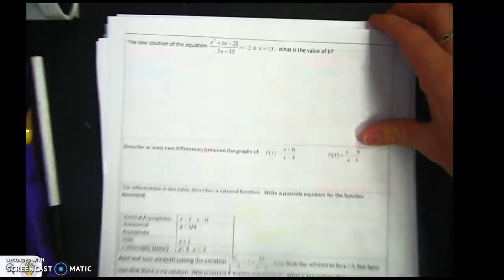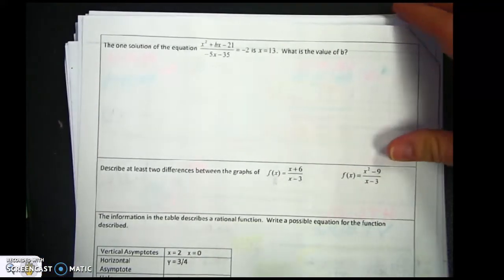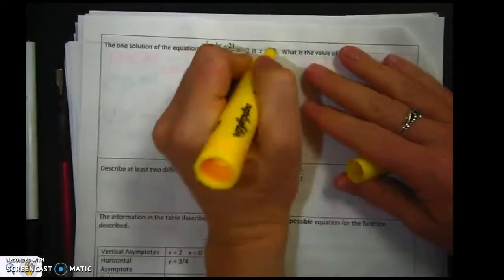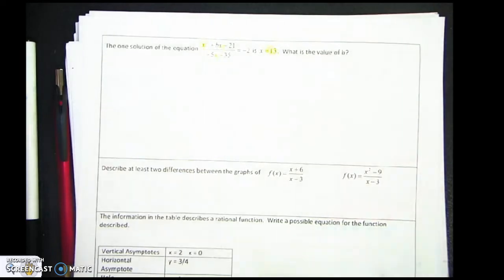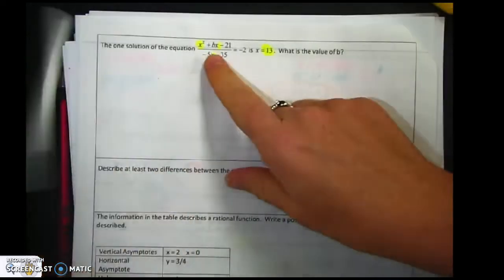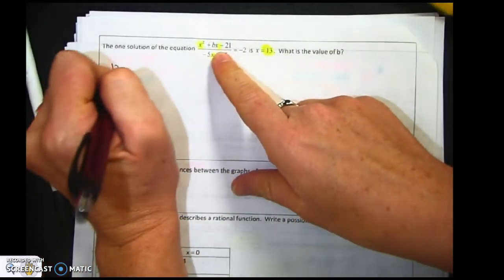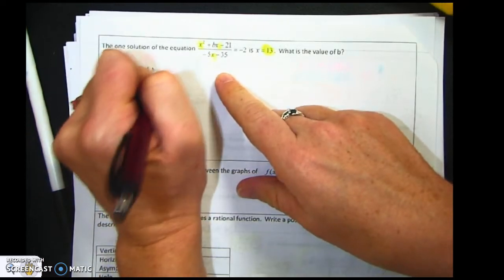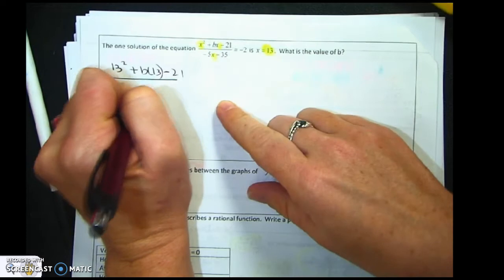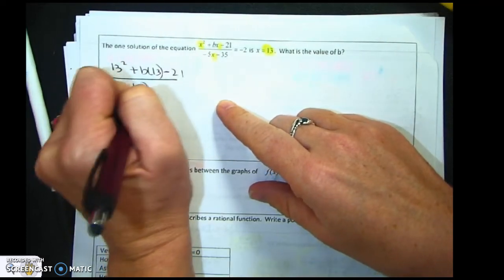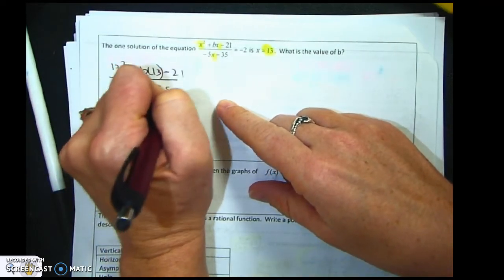So there are different ways to approach this problem. The way that I would approach it is I would have put 3 in for x, or 13, excuse me.